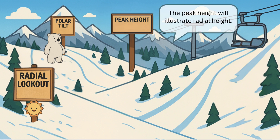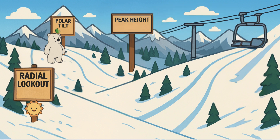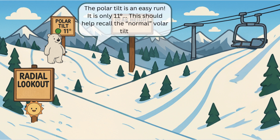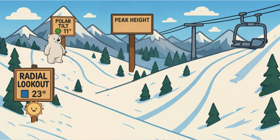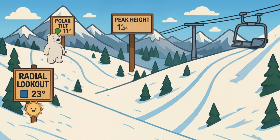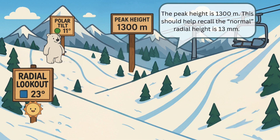The polar tilt on the top left is our easy run of the day — it's only 11 degrees, and that should help you remember the normal volar tilt of the distal radius. In our radial lookout we have a 23 degrees symbol to help us remember 23 degrees is the normal radial inclination. The peak height of this mountain today is 1300 meters, which will help us remember 13 millimeters as normal for radial height.